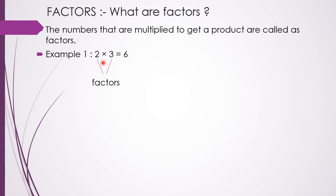Now let us think: 2 and 3 are multiplied to get 6, so 2 is a factor of 6 and 3 is also a factor of 6, and 6 is the product. Let us stop and think — are 2 and 3 the only numbers which can be multiplied to get the product 6?